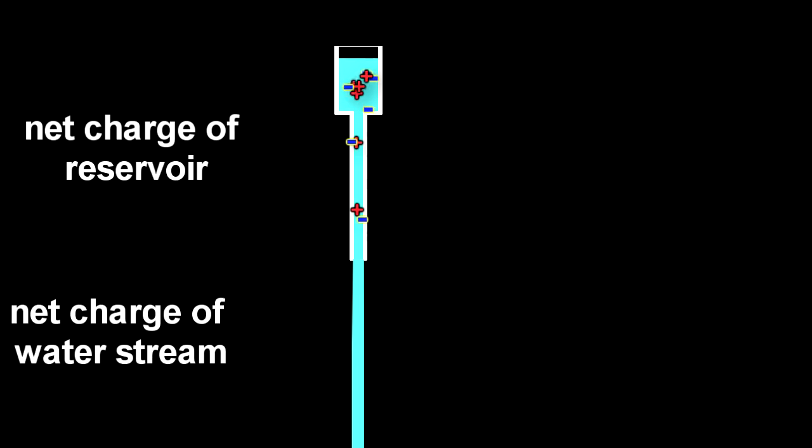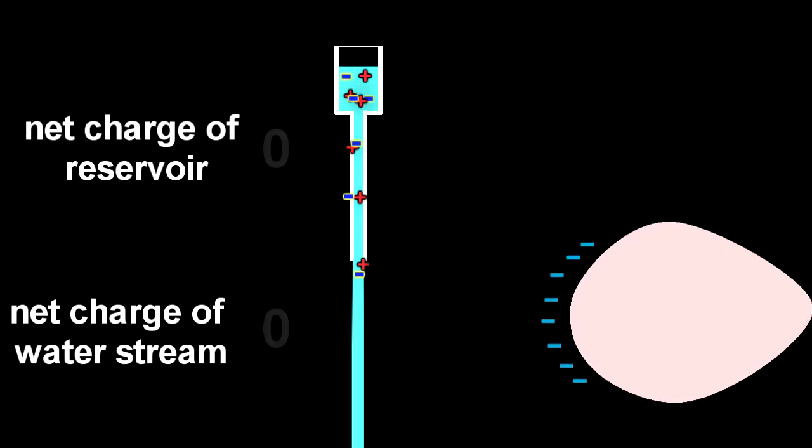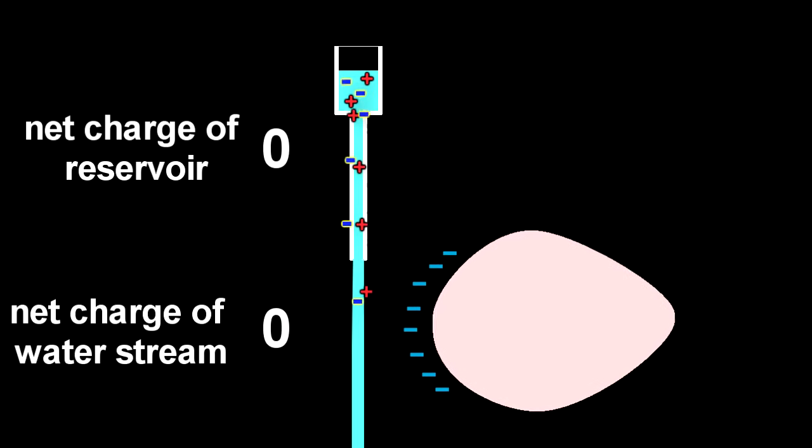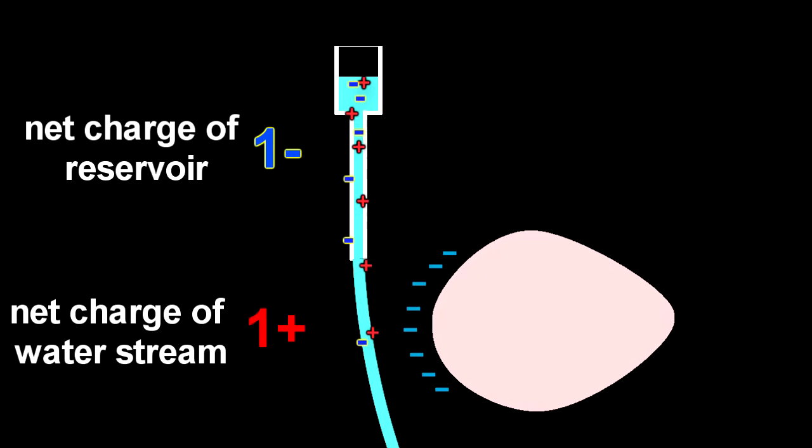That is, charge cannot effectively leak away from this object. So if Veritasium is right, then when we actually move a charged object next to the stream of water coming out of the bottom of this, then we should initially see that it's attracted. Which means that we are actually carrying a net positive charge away from the rest of the water.